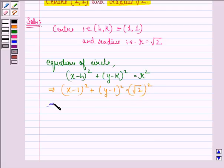And this implies x² + 1 - 2x + y² + 1 - 2y is equal to, now square of root 2 is 2.